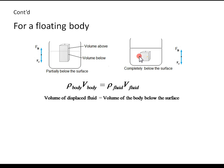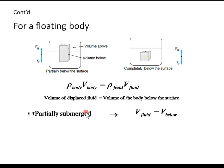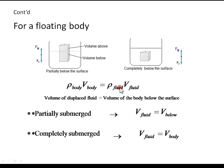But in the other case, the volume of the displaced fluid equals the volume of the body itself because it is completely below the surface. So for a partially submerged object, the volume of the fluid and the volume of the object below the surface are the same. For a completely submerged floating object, the volume of the body and volume of the fluid are the same — so the densities cancel and we get density of the body equal to density of the fluid.